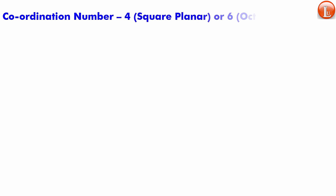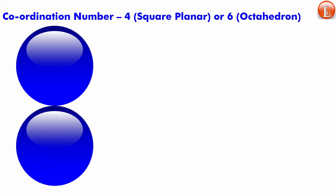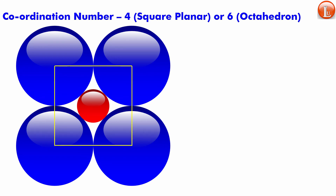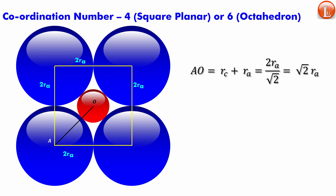Now let's go to coordination number four square planar, which shares the same radius ratio as coordination number six octahedron. In square planar, four anions are arranged in a square plane — the diagonal anions cannot touch each other. The cation sits at the center touching all four. The side of the square is 2rₐ, the diagonal is √2 · 2rₐ = 2√2·rₐ, and half the diagonal — which equals rᶜ + rₐ — is √2·rₐ.